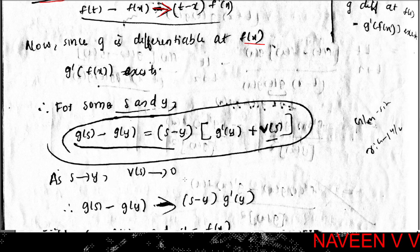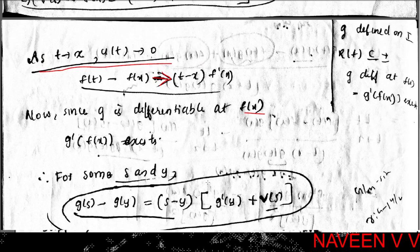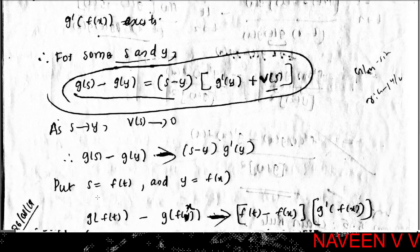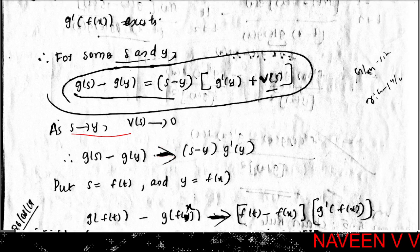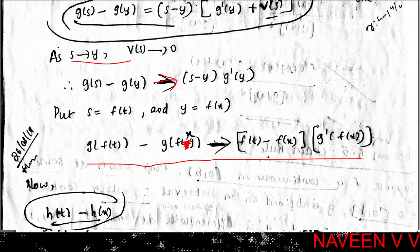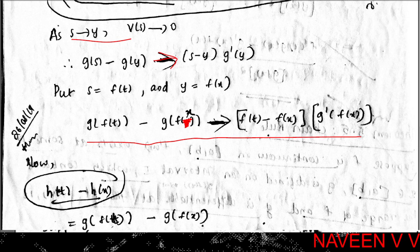Similarly, since g is differentiable at y = f(x), we have g(s) - g(y) = (s - y)·g'(y) + v(s), where v(s)→0 as s→y. Setting y = f(x) and s = f(t), and using continuity of f, as t→x, f(t)→f(x), so v(s)→0. Substituting: g(f(t)) - g(f(x)) = [f(t) - f(x)]·g'(f(x)) + v(s).